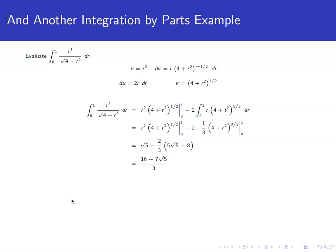So this one's asking us to integrate from 0 to 1 r cubed over 4 plus r squared dr. Alright, so I'm going to try to do this by parts.